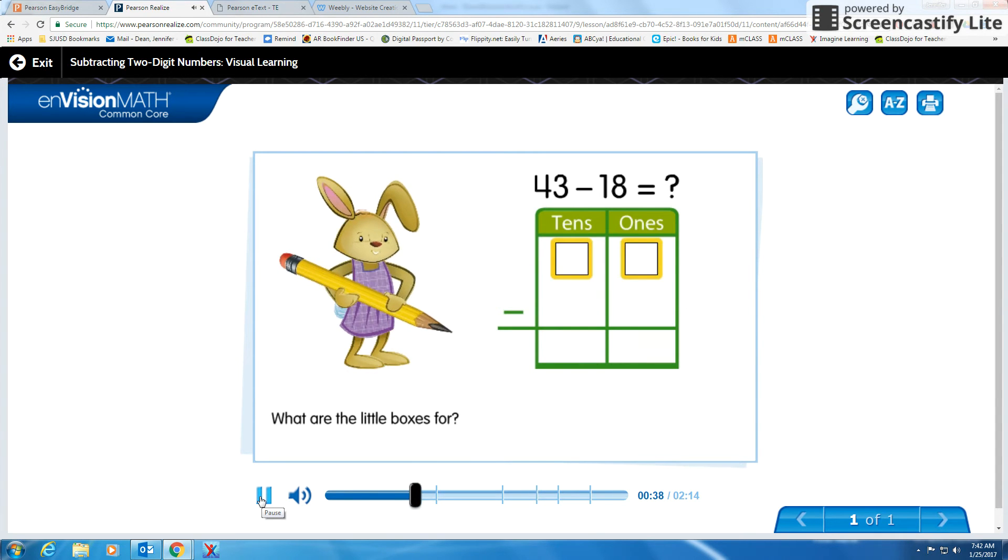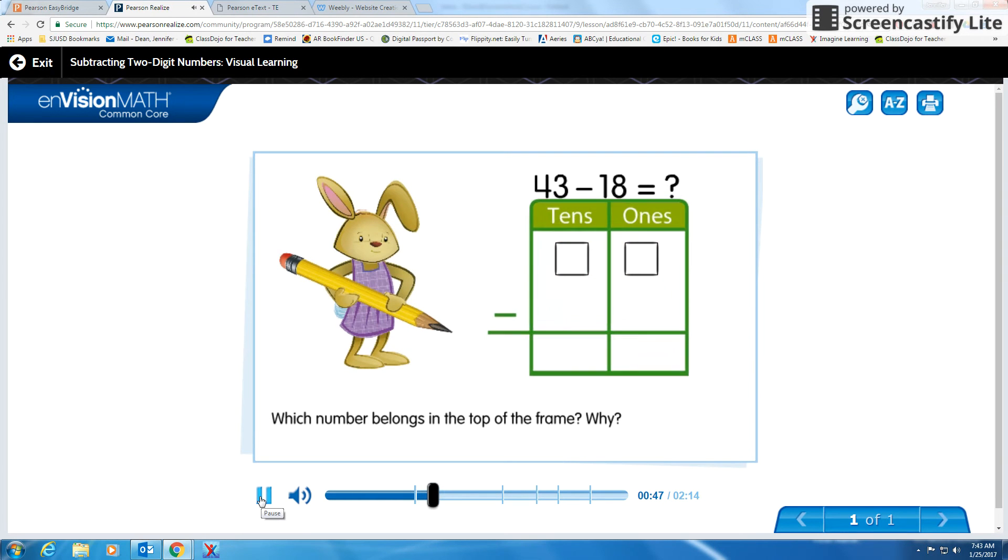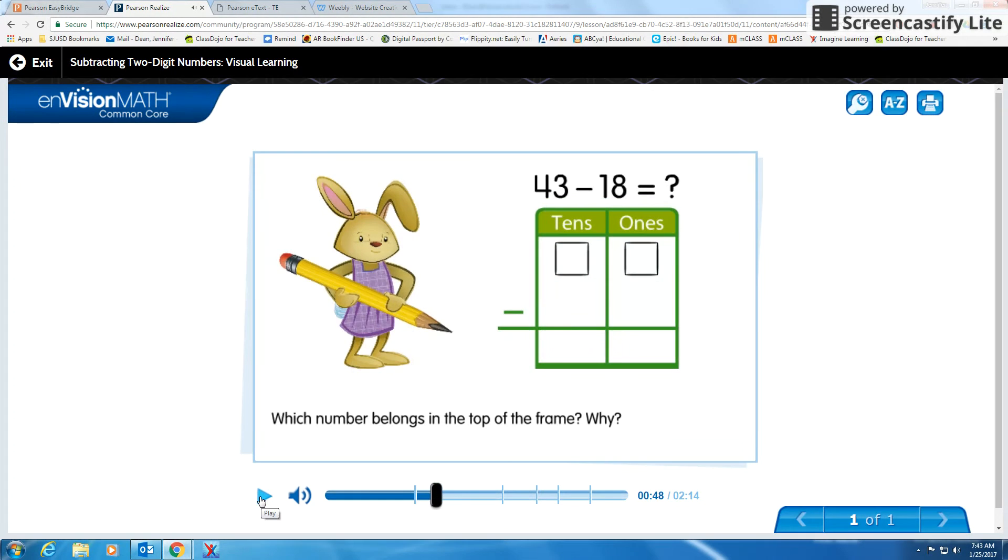What are the little boxes for? You use them if you regroup. Which number belongs in the top of the frame? Why? 43 is the number from which you are subtracting. It goes on top. Then write 18 below it to subtract.